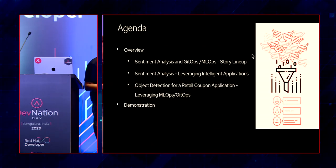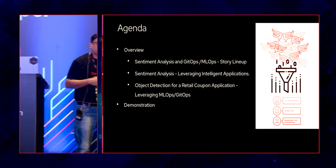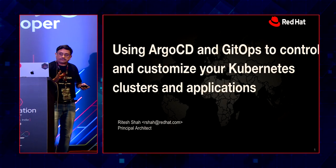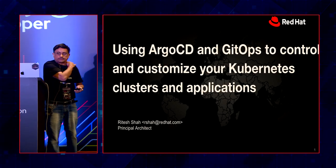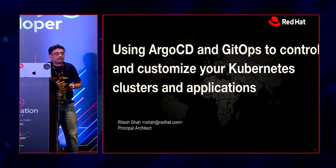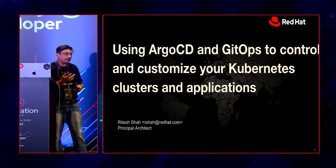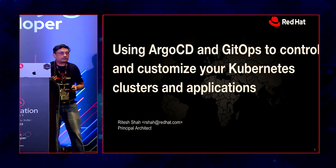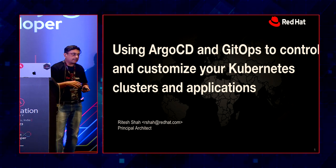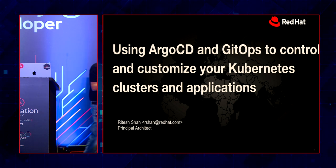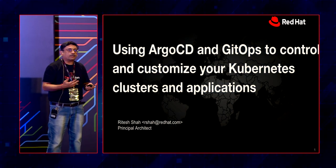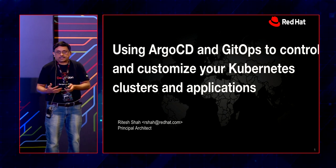As Jaya mentioned, this is going to be an extension of the same storyline as what we did as part of the detail use case. This is the overall session we are going to walk through. We will be using Argo CD — it's an OpenShift GitOps. The open source tool is called Argo CD and we will use it to control and customize our Kubernetes clusters and applications. We will use the use case of MLOps, understanding how GitOps can be leveraged as part of MLOps.